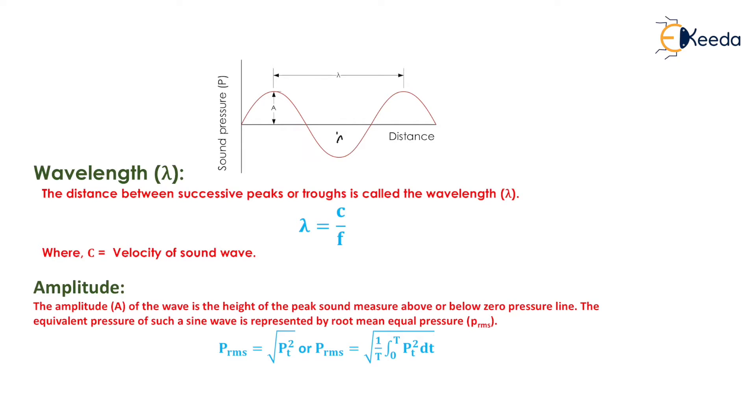The wavelength is the next parameter which we need to discuss. We have prepared a curve again, and on the x-axis in place of time we have taken the distance, and on the y-axis we have taken the sound pressure. For the wavelength, the distance between successive peaks or troughs is called the wavelength.